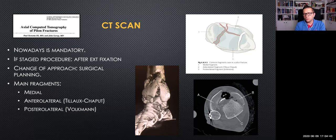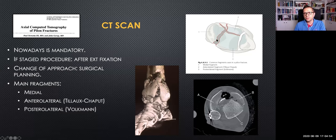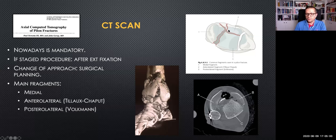Although there is a lot of variability, there are three constant fragments in every tibial pilon fracture: the medial fragment, the anterolateral, and the posterolateral. These are, most of the time, constant fragments.